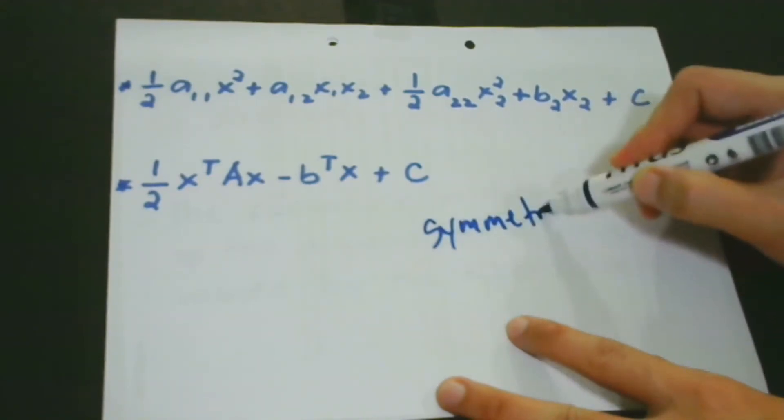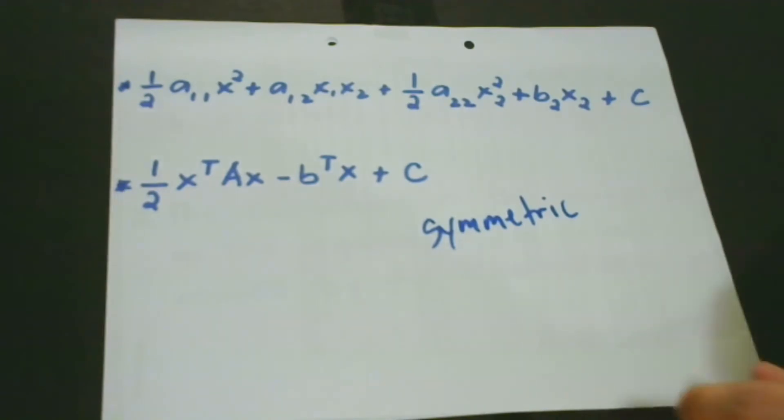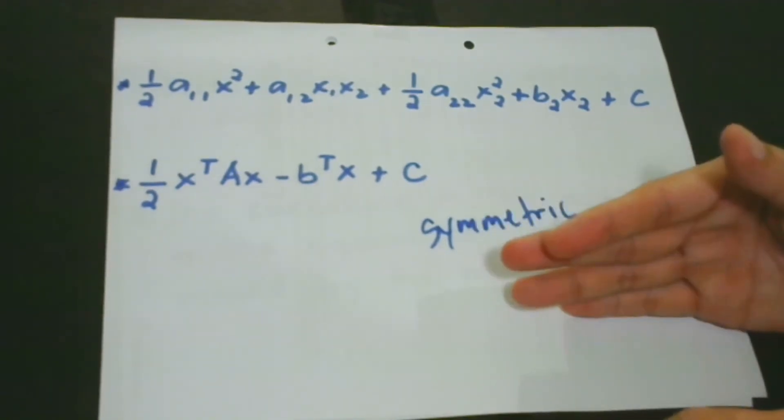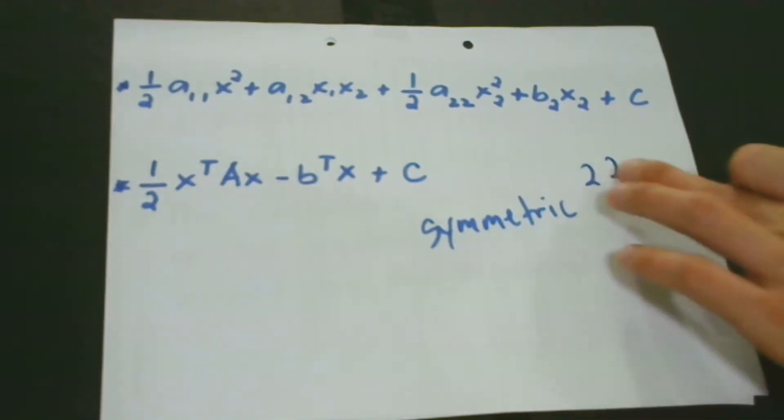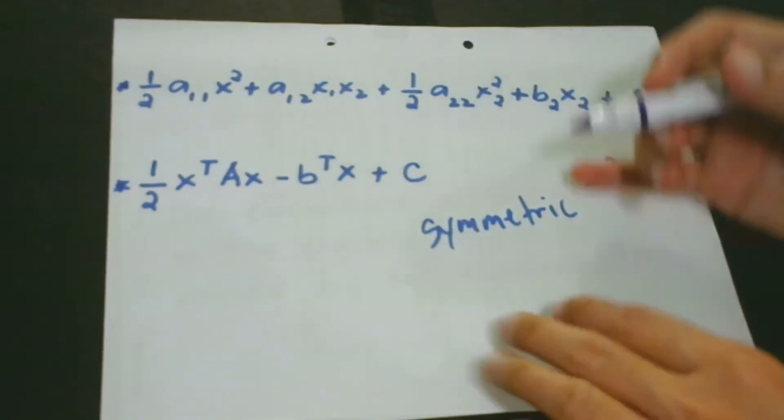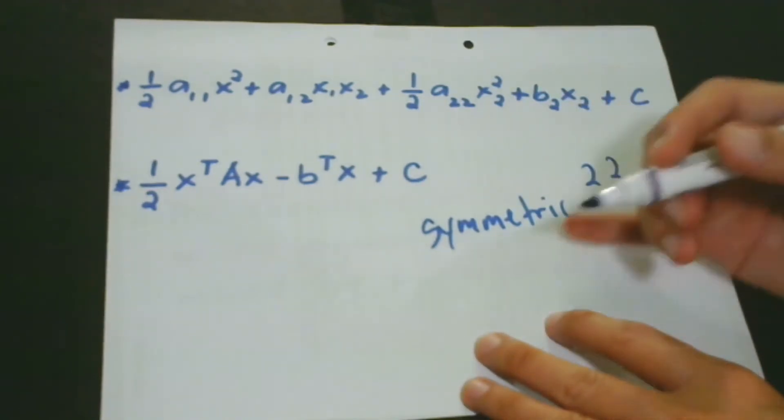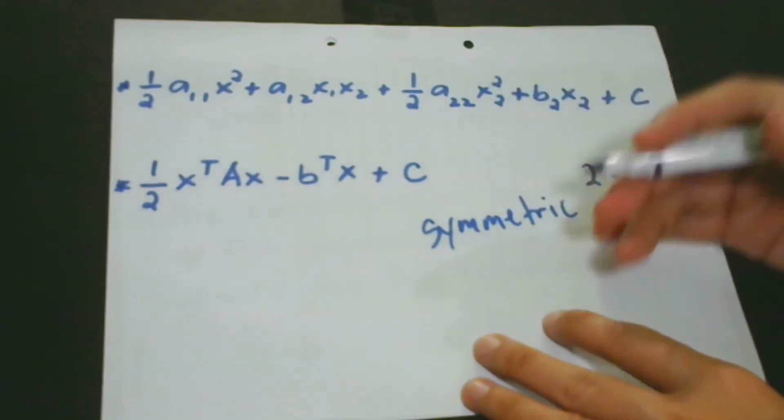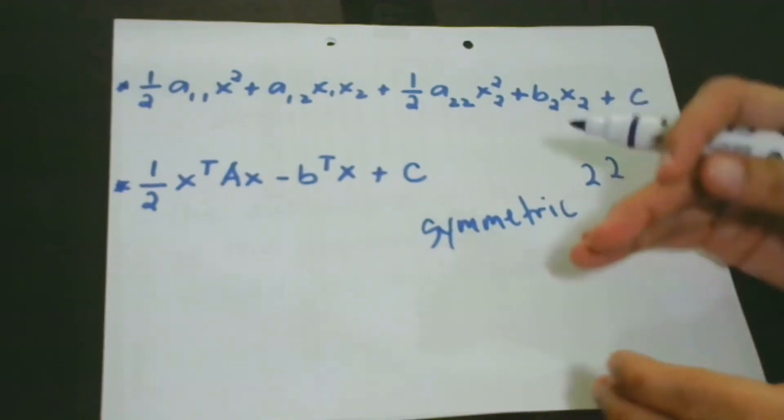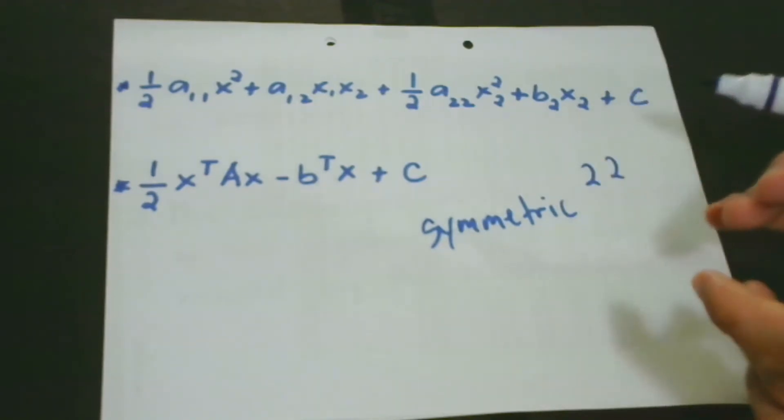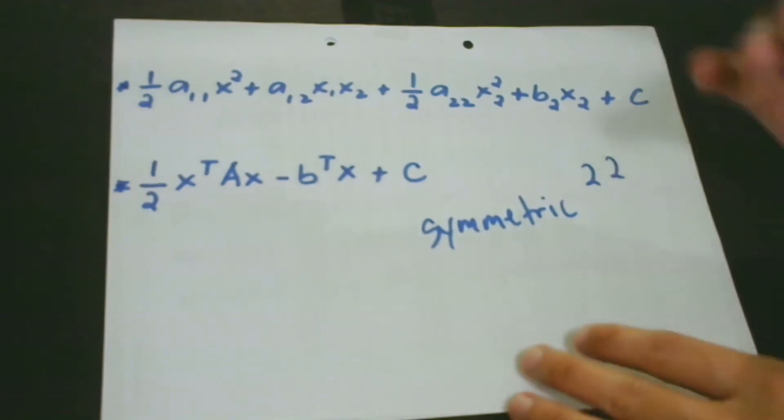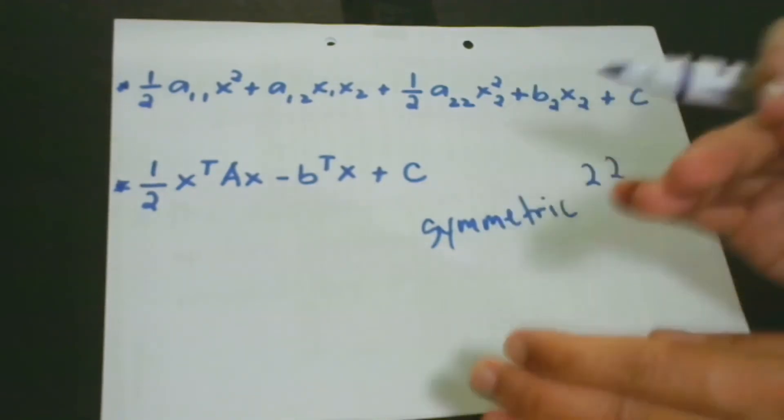One thing that we have to take note of is that matrix A is symmetric. Do you still remember symmetric? When we say a certain matrix is symmetric, it means to say that it has the same number of columns and rows. So when a row, for example, has two elements, then also a column has two. Or if we have two rows, then we have two columns.